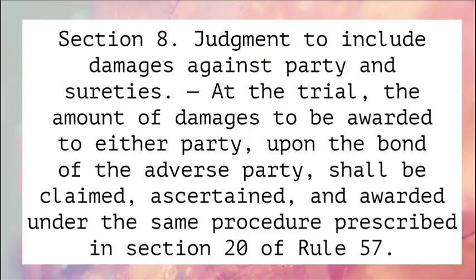Section 8. Judgment to Include Damages Against Party and Sureties. At the trial, the amount of damages to be awarded to either party upon the bond of the adverse party shall be claimed, ascertained, and awarded under the same procedure prescribed in Section 20 of Rule 57.